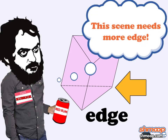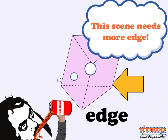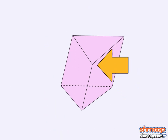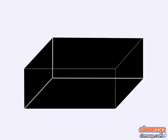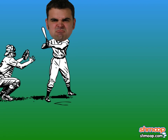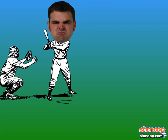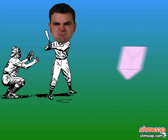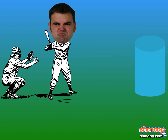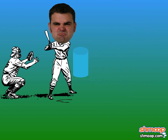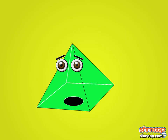The line that connects two faces is called an edge. And a point on a 3D shape is called a vertex. Prisms are two parallel polygons, called bases, with a bunch of lateral faces that connect them. They're named after the shape of their bases, so we could have triangular prisms or hexagonal prisms. Cylinders are like prisms, only the bases are circles instead. Pyramids are like prisms, but with only one base.